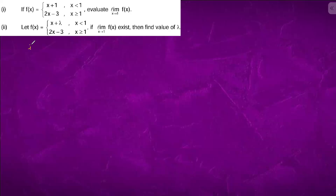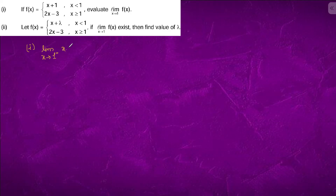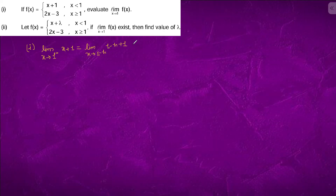Question 1: we are given that we have to find the limit at 1 minus and 1 plus. Limit x tending to 1 minus of x plus 1, which can be written as limit x tending to 1 minus h of (1 minus h) plus 1, which equals limit h tending to 0 of 2 minus h, which equals 2.